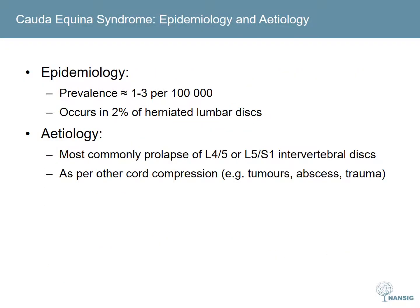Now let's focus on cauda equina compression. Its prevalence is fairly low, occurring in approximately 1–3 per 100,000, and in 2% of all herniated lumbar discs. Whilst CES can be the result of any lesion compressing the cord, as we've previously discussed, prolapse of the intervertebral discs at the L4/5 or L5/S1 levels are the most common cause.